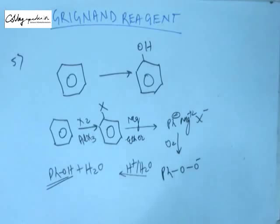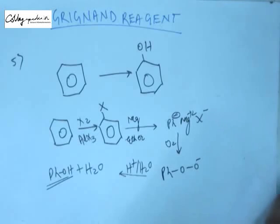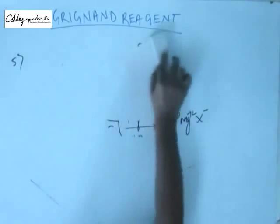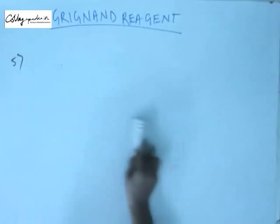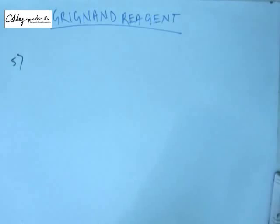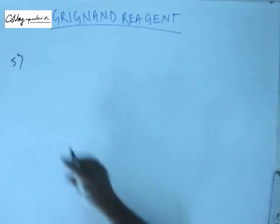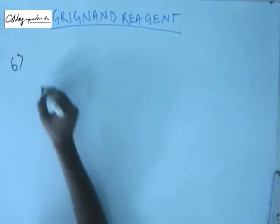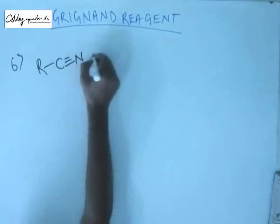So this is one of the methods of preparation of phenol. Whenever we study phenol, we will study preparation of phenol, and this will be included as one of those methods. So this you have to bear in mind. The last reaction of Grignard reagent that we are going to see is an important one — the reaction of Grignard reagent with cyanide.